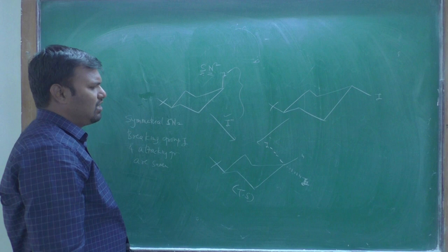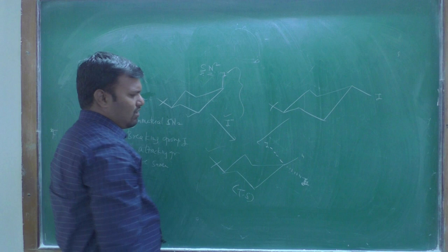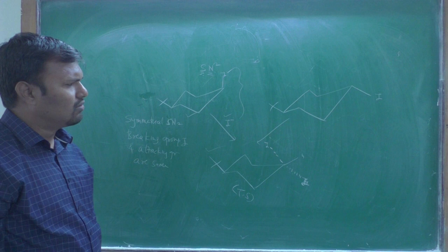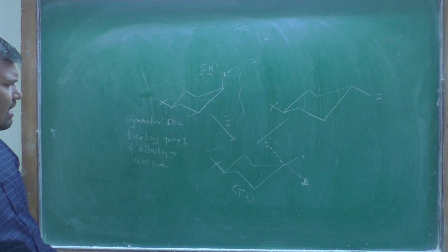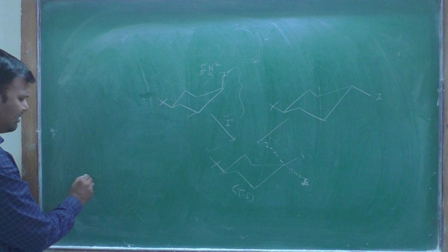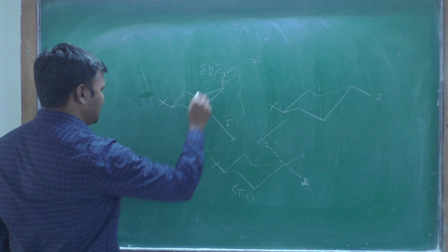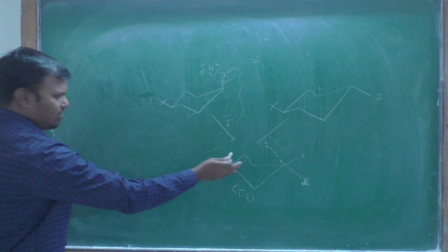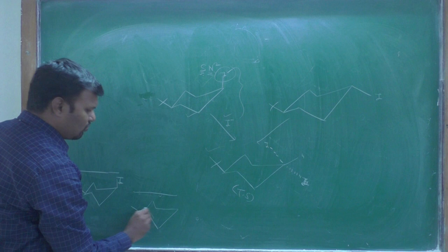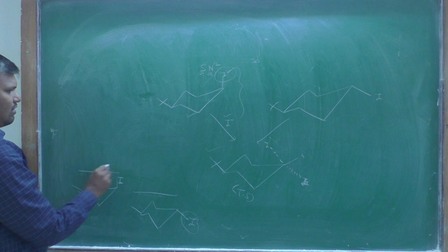In this reaction, both molecules are involved in the rate determining state; attack of the nucleophile and departure of the leaving group occur simultaneously. You find that when the iodide is at the axial position, the transition state is the same for both isomers. However, the steric crowding in the ground state for the axial group is higher than the steric crowding in the transition state.